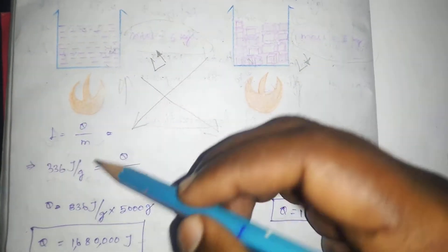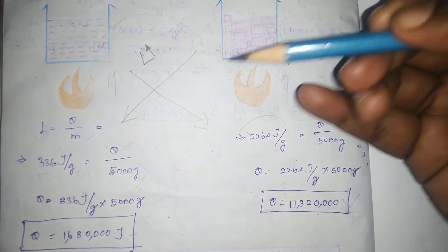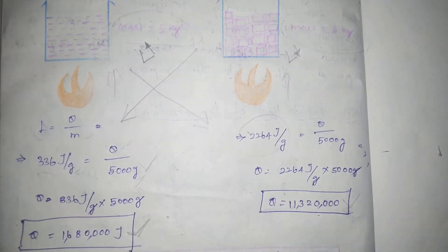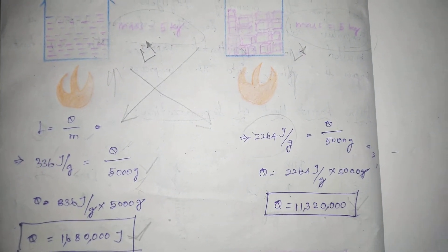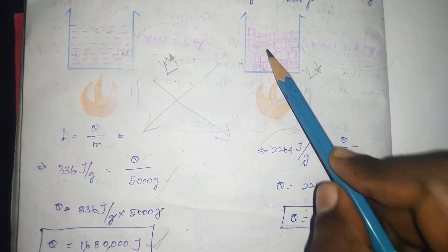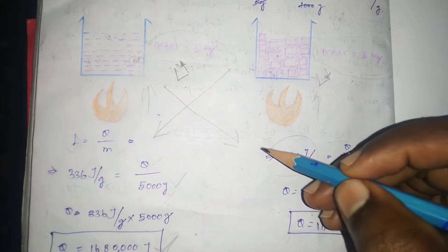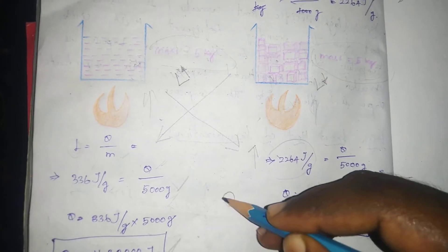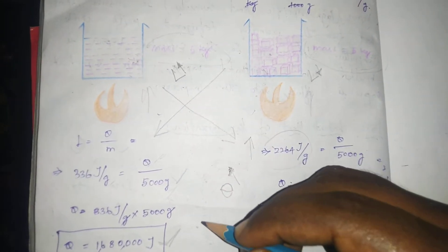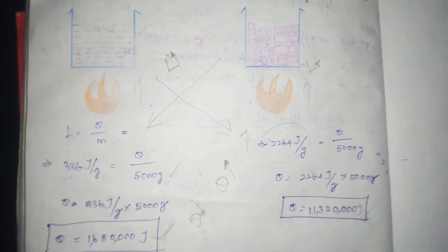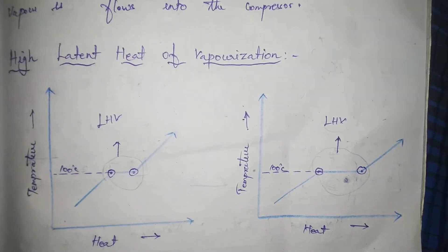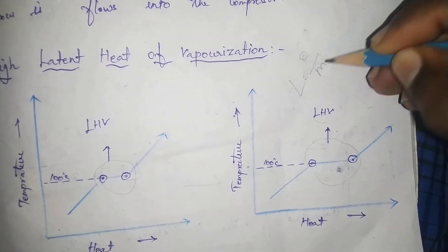The latent heat of vaporization here is 336 J per gram. Q is the heat absorbed, and M is the mass. So we can calculate the heat absorbed. If we add the same amount of heat in joules, with the same amount of mass, the heat absorption depends on the latent heat of vaporization used.